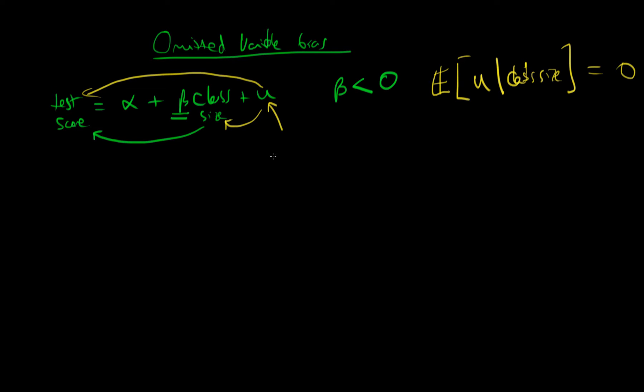So we can think about what types of variables might be included in U which are important in determining test scores and are positively correlated with class size. One of them might be a school's level of funding, whether it's privately funded or funded by the government.